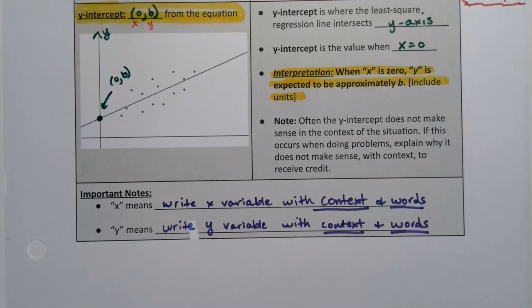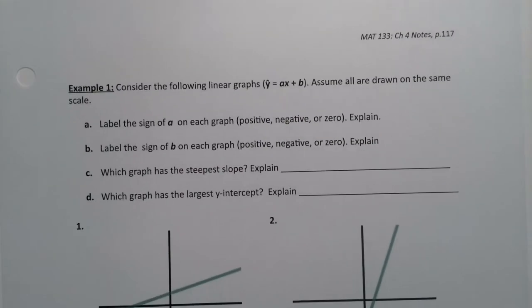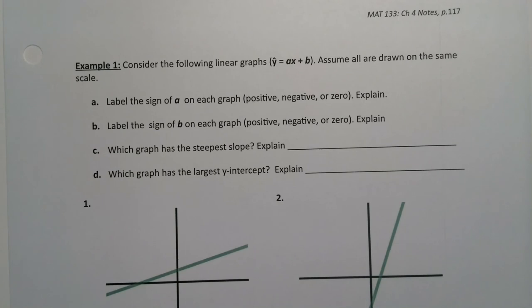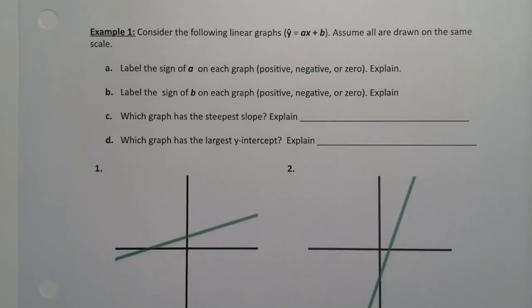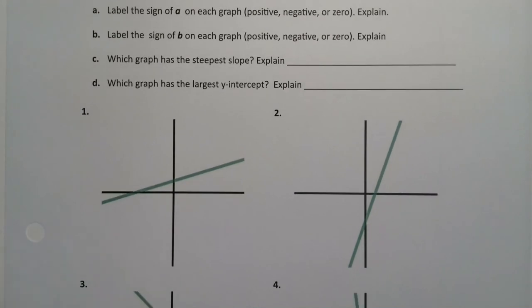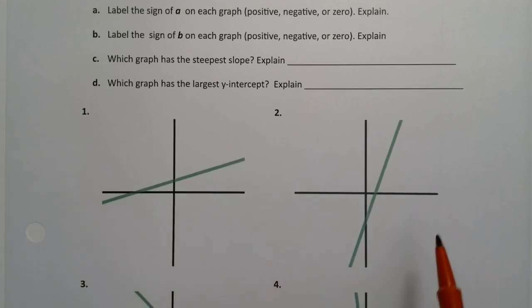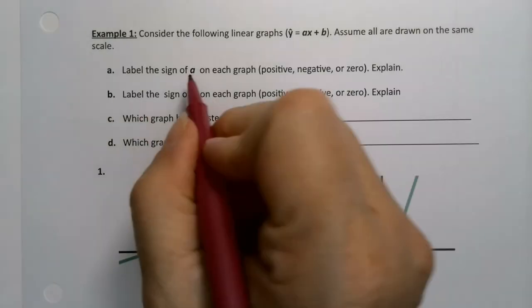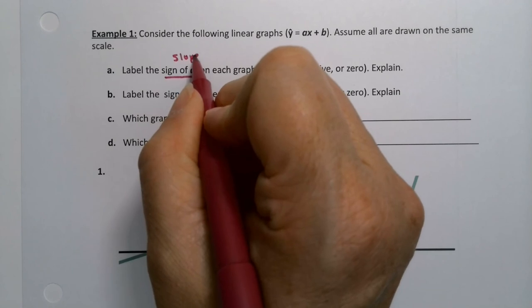Now let's put our knowledge of slope and intercept to the test a little bit and answer some questions in this next example. Obviously, that last page is very important, so we want to make sure we really understand it. I have four graphs drawn here, and we're going to assume all the graphs are drawn on the same scale. So if it's negative 10 to 10, then it's negative 10 to 10 for all of these graphs. We're going to label the sign of a on each graph. Now, a is the slope.